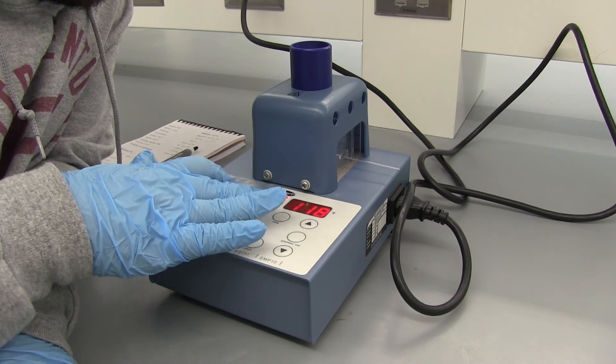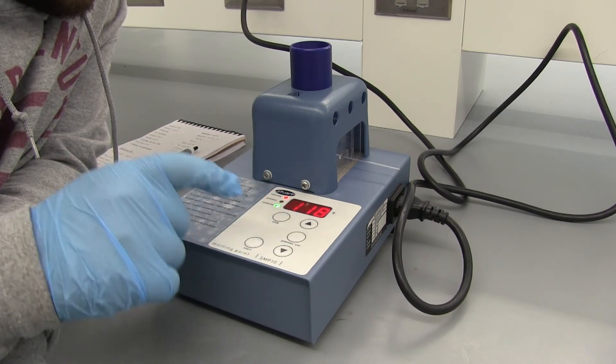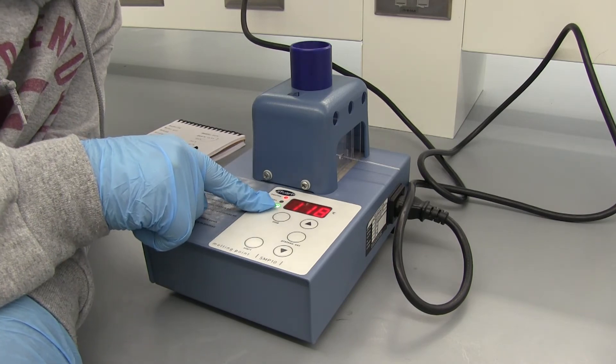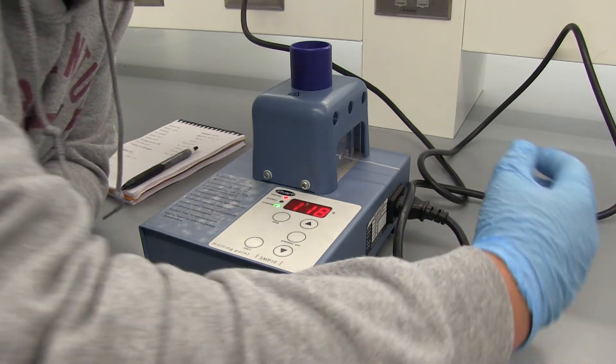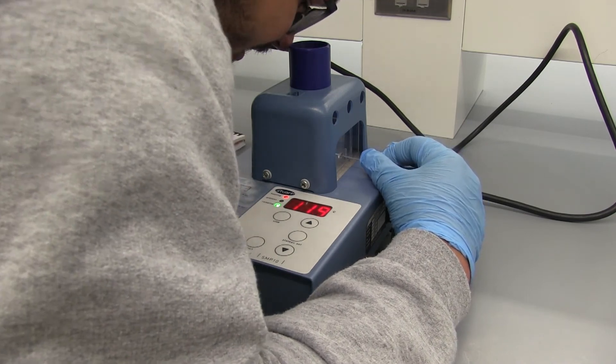Alright so once the plateau light comes on, this orange light here, we can press start again. The green light means it's going to be ramping at 2 degrees Celsius per minute and should just allow us to get a more accurate melting point.